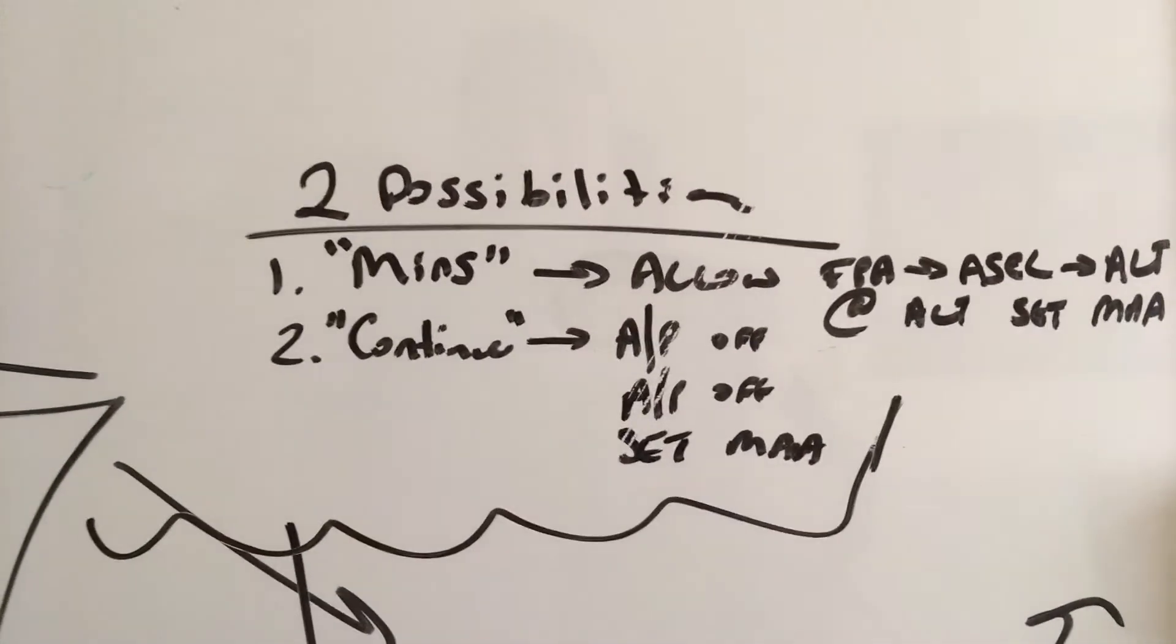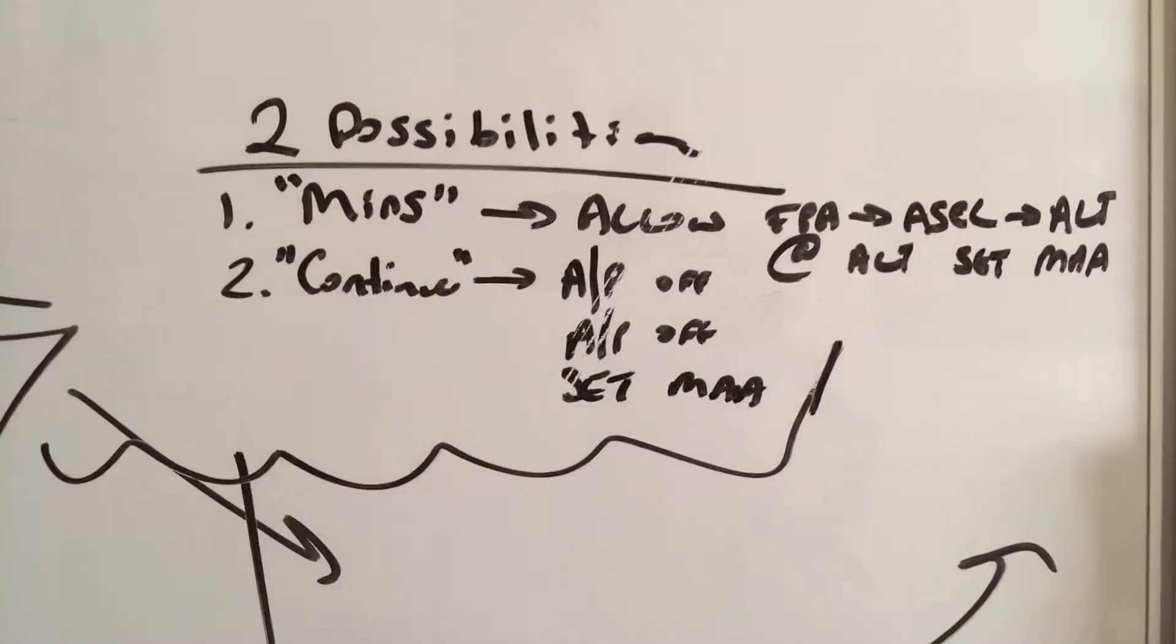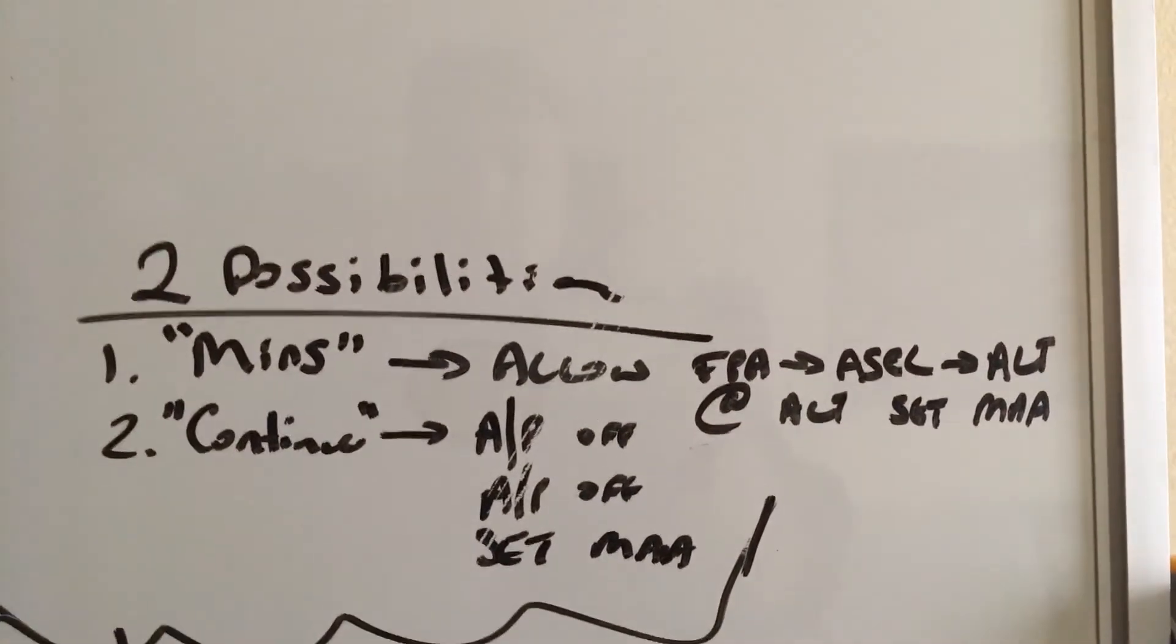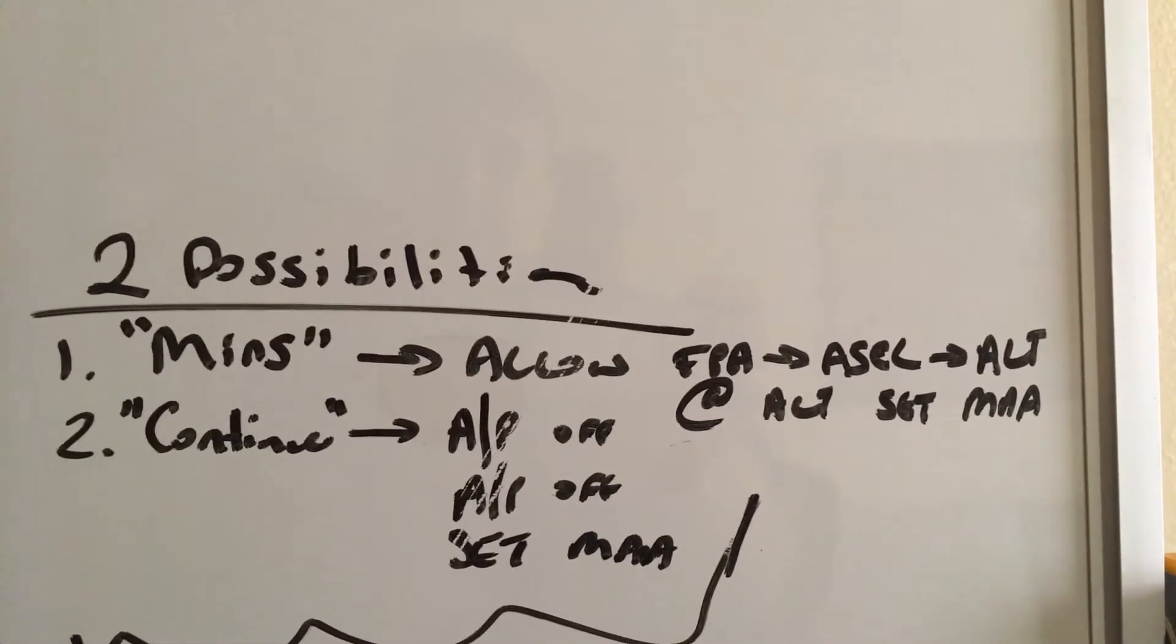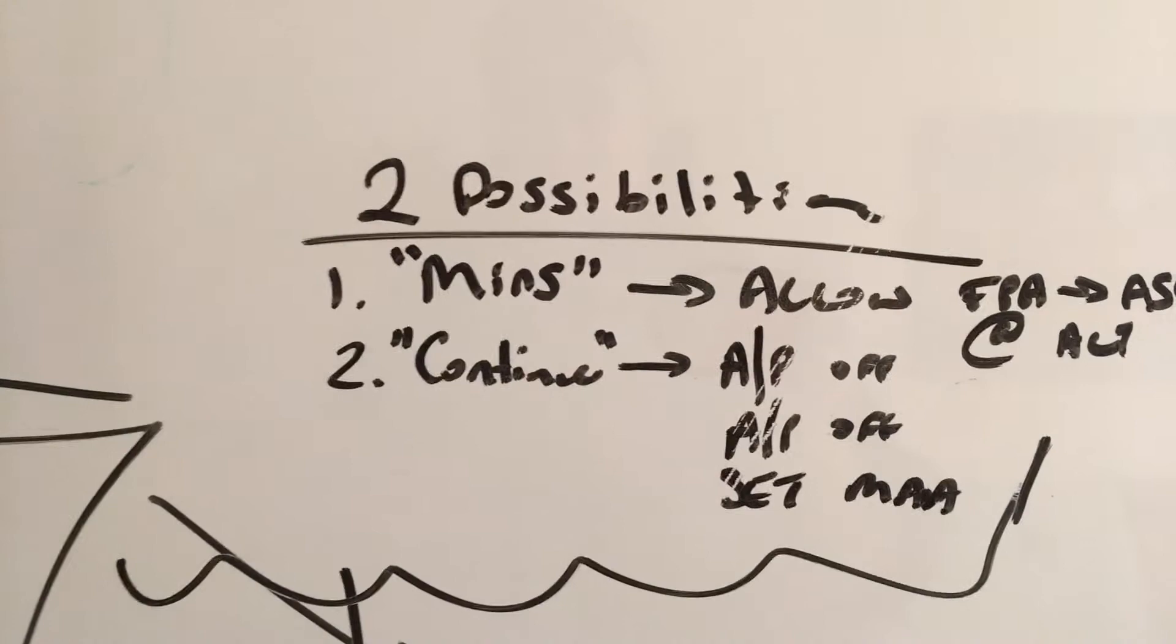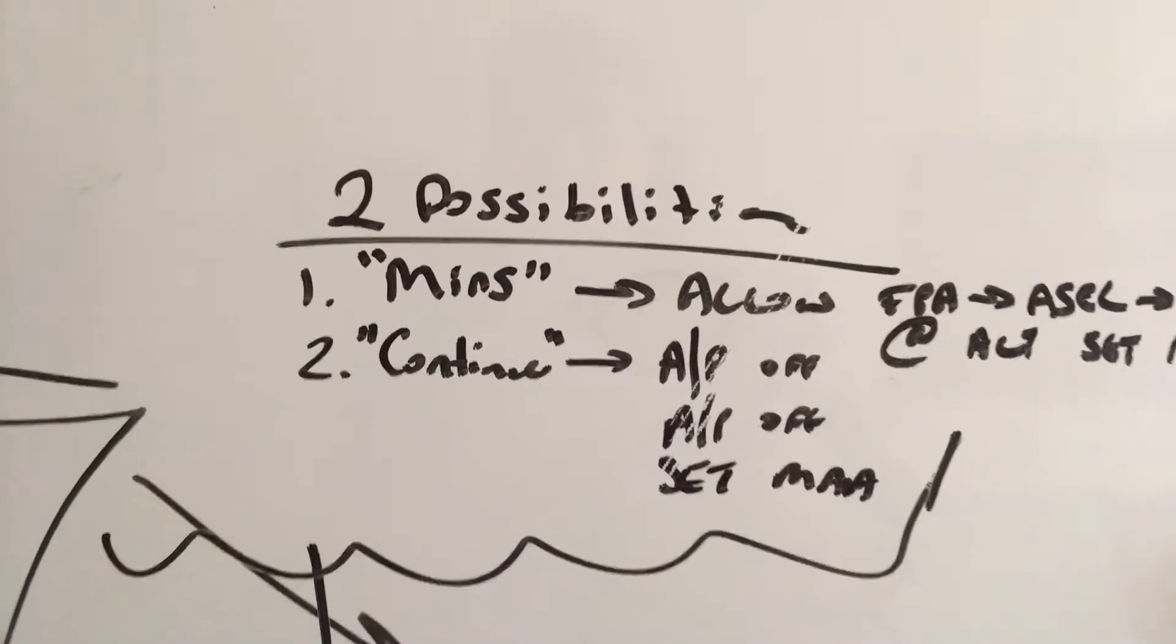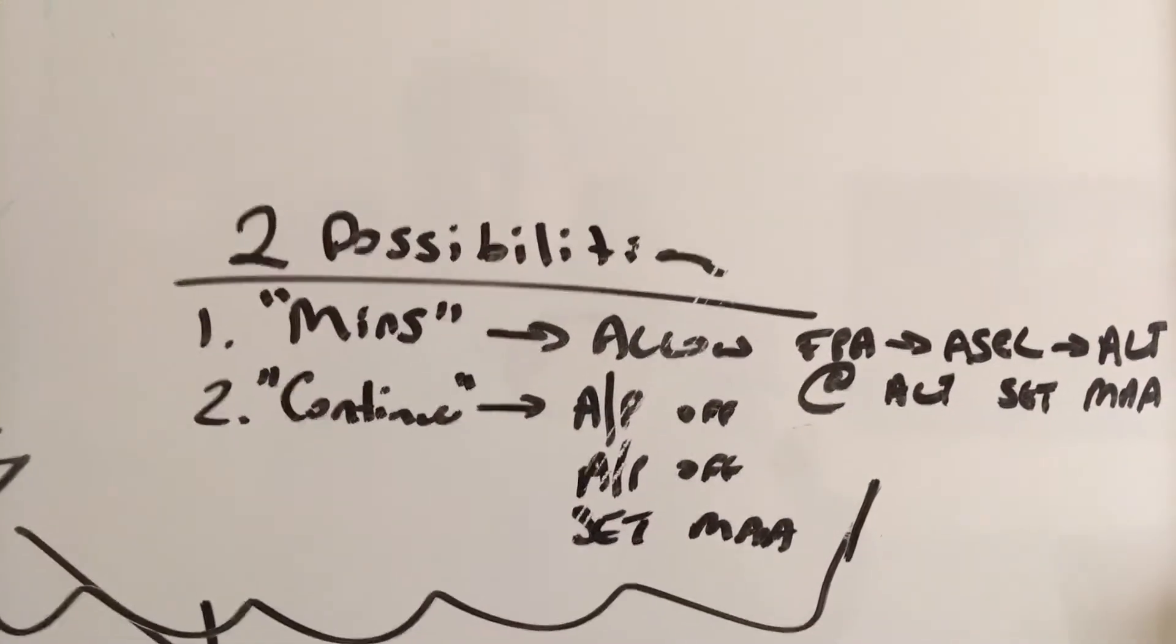After this, as we're coming in on the approach, we have two possible outcomes. We'll either hear minimums or continue. If you hear minimums, allow the aircraft to capture altitude and then once it does, set missed approach altitude. If by chance you hear your monitor pilot say continue, autopilot off, autopilot off, and then ask him or her to set missed approach altitude.